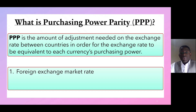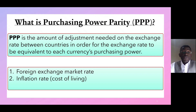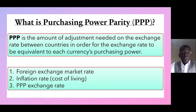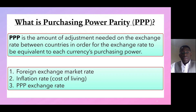When we talk of Purchasing Power Parity, we talk of three main things: number one, the foreign exchange market rate; number two, the inflation rate or the cost of living; and number three, the PPP exchange rate. In other words, how can we adjust the foreign exchange market rate, taking into account the cost of living, so that it is equal to a certain Purchasing Power Parity exchange rate?